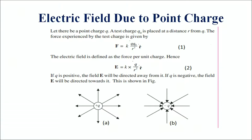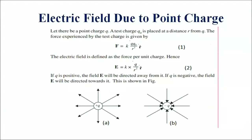Now we will represent the electric lines of force due to a point charge. How the electric lines of force are depicted in the case of a positive and negative charge are shown in figures A and B. In the case of a positive charge, the electric field lines are radially outwards, whereas in the case of a negative charge, the electric field lines are radially inwards.